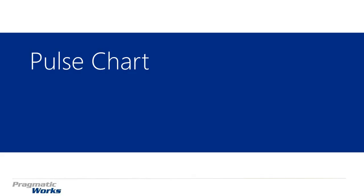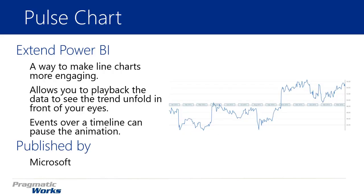Welcome back to the Power BI Custom Visuals course. In this module we're going to be looking at the Pulse Chart. The Pulse Chart is really an extended or enhanced way of doing a line chart. It's great at showing trends in your data, and not only showing trends but allowing you to make it more engaging with a playback feature. If you bring in a timestamp field, you can animate your line chart over time and even have pauses or disruptions when certain events occur.